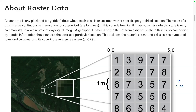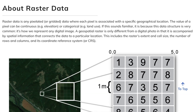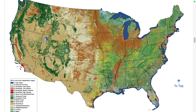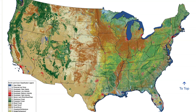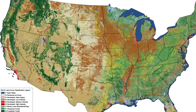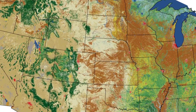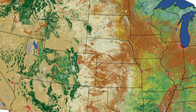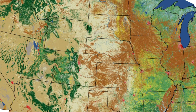Raster data, as you can see from this lesson from the Carpentries, consists of pixelated or grid data where each pixel is associated with a specific geographical location. Raster data is often used to show patterns, such as the different types of land cover that make up the continental United States.